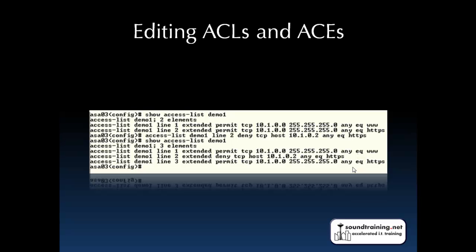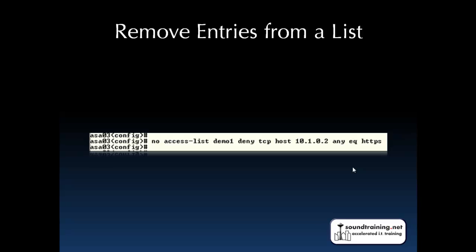It's easy to edit ACLs in a Cisco ASA security appliance compared to a router. In the first example of the show access-list demo1 output, we have two entries. Then we add an entry and place it in position 2 — line 2 — and in the output after the addition, the former line 2 has been bumped down to line 3. You can remove lines from a list with the Cisco 'no' command — just put 'no' in front of the exact same syntax you used to create the line.